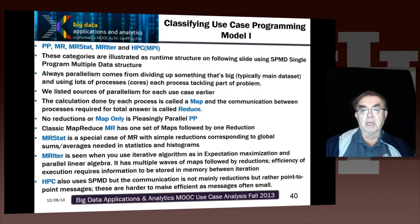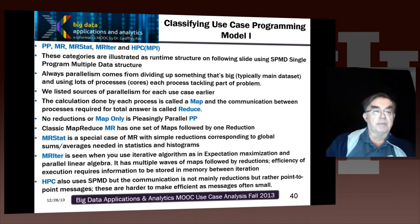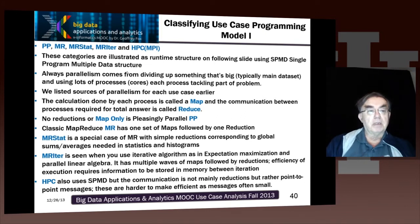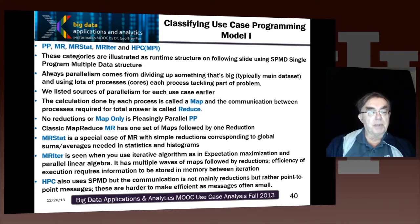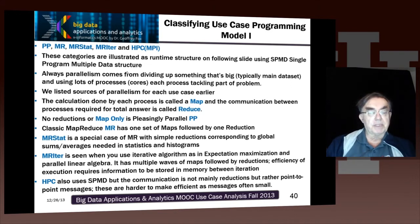We have a famous slide which characterizes the various versions of MapReduce, and also pleasingly parallel, which is a so-called MapOnly — a special case of MapReduce. We have these five types of MapReduce: pleasingly parallel, MapReduce, MapReduceStat, MapReduce Iter, and HPC. Those are all variants of MapReduce with slightly different structure.